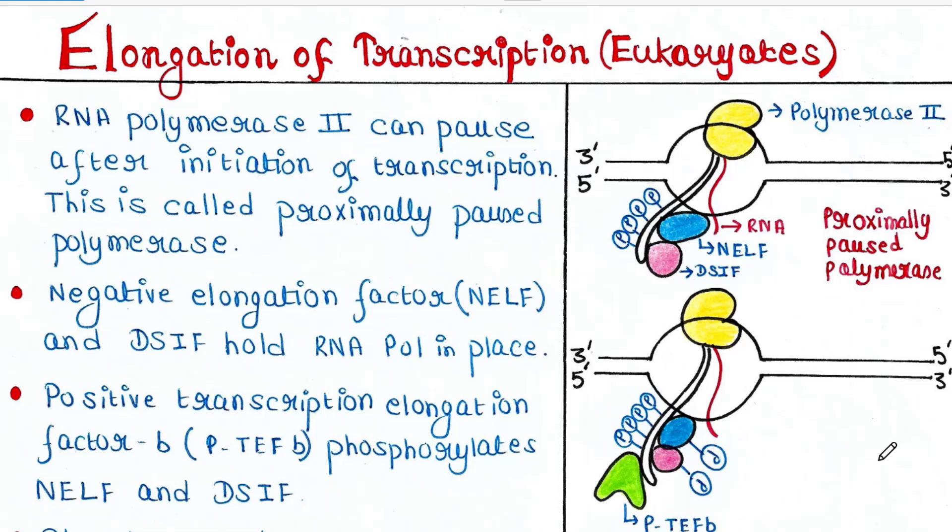Eukaryotic transcription occurs in three phases: initiation, elongation, and termination. In our last lecture we discussed the initiation part. Today we will talk about elongation.